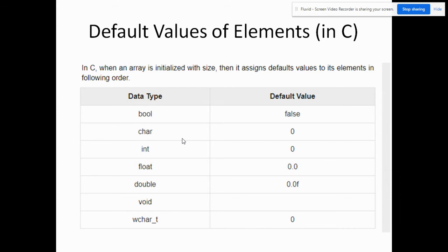Default values of elements in C. If we declare an array without initializing the values, then this will be the default values. For boolean, it will be all false. For character, it will be zero, or that's the same as null, and so on and so forth. We'll be discussing that in detail.